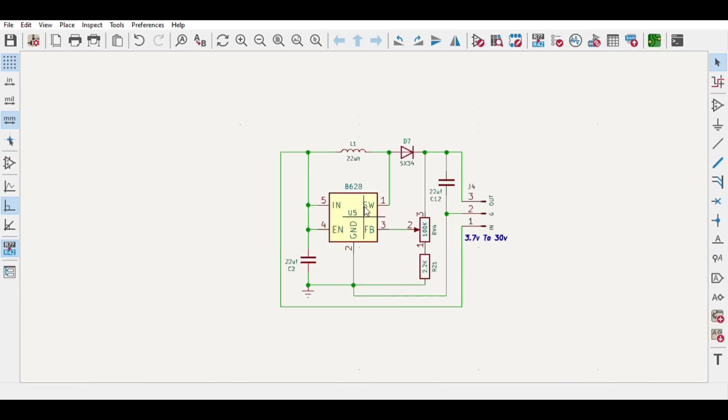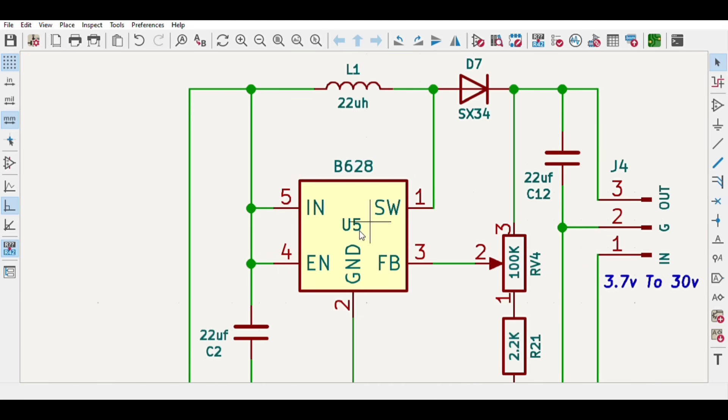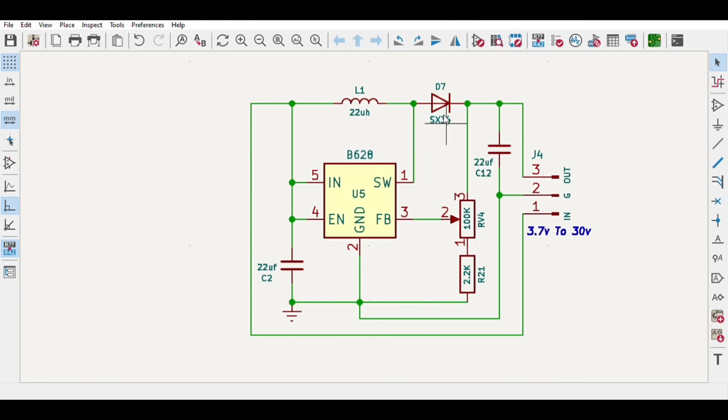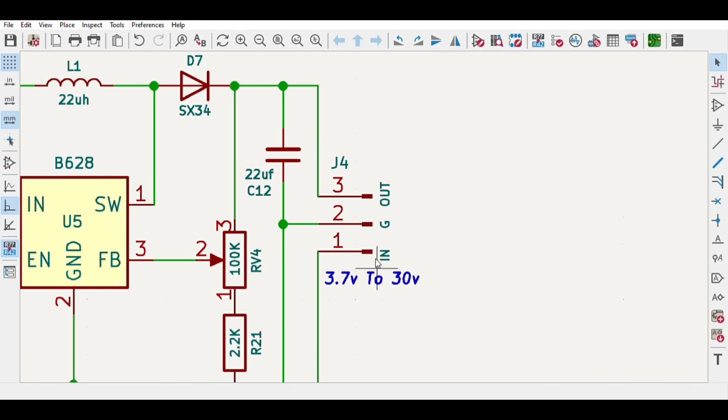For which I designed the simple schematic circuit diagram with B628 high frequency oscillator and with just a few other components. The voltage can be adjusted with this potentiometer and the output range can be adjusted from 3.7 to 30 volts.